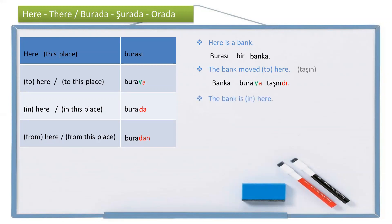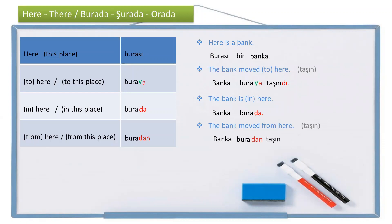And the last bank example — the bank moved from here, it moved from this place to somewhere else. The bank, banka, from here — buradan, the ablative case. Moved — taşındı. So: banka buradan taşındı. The bank moved from here; the bank moved from this place.